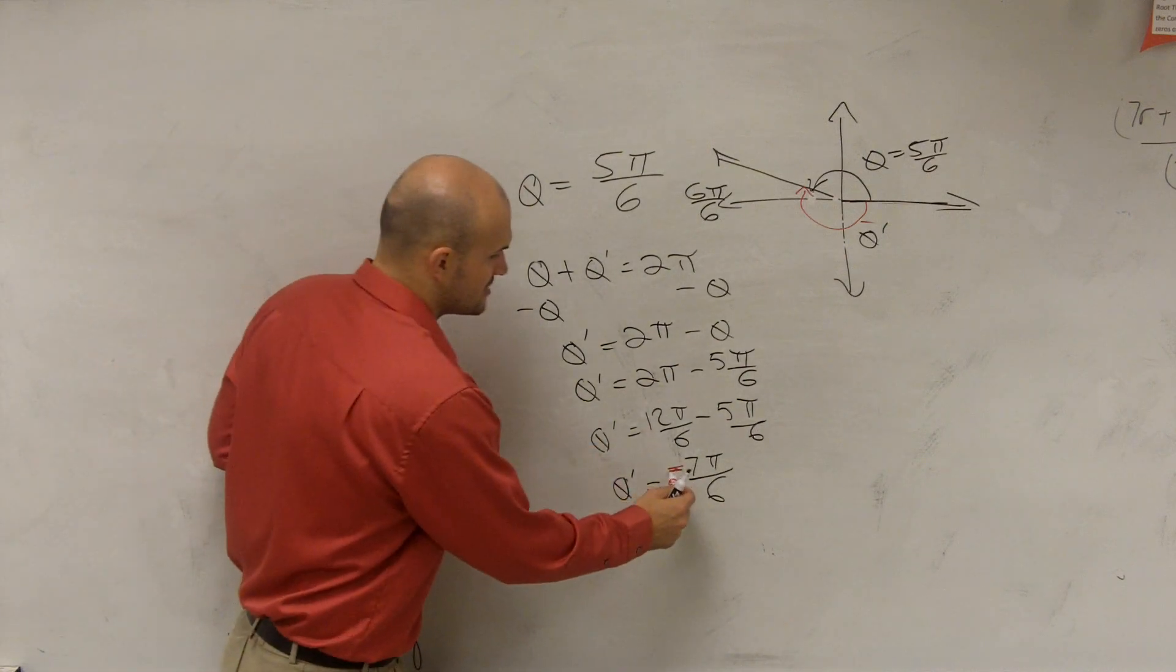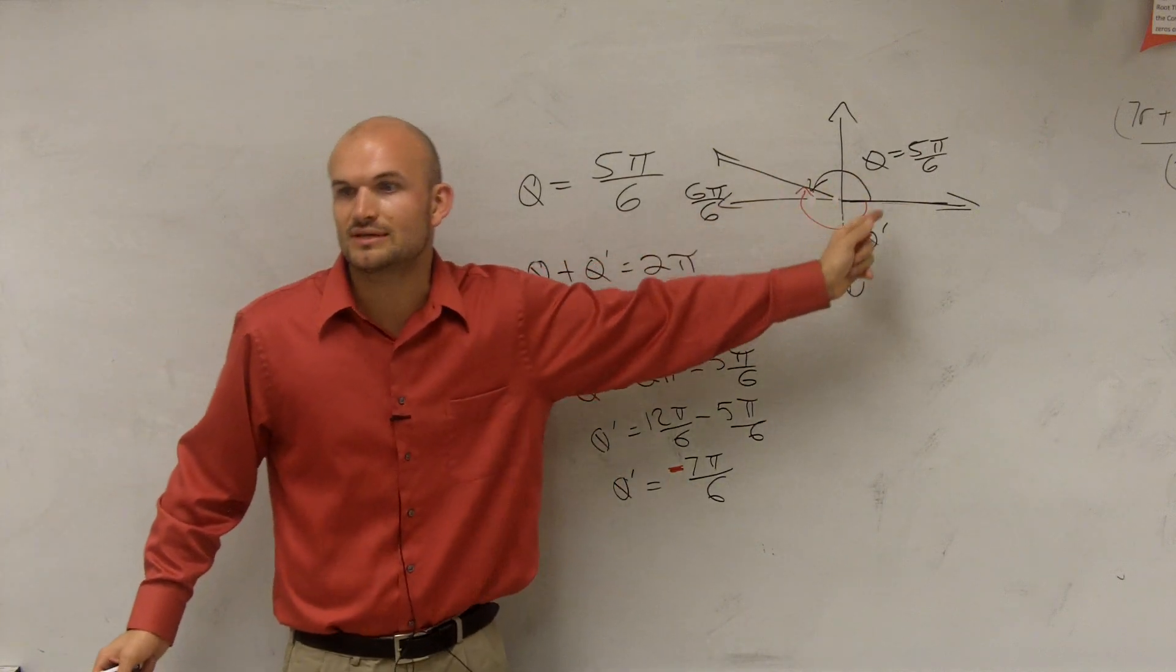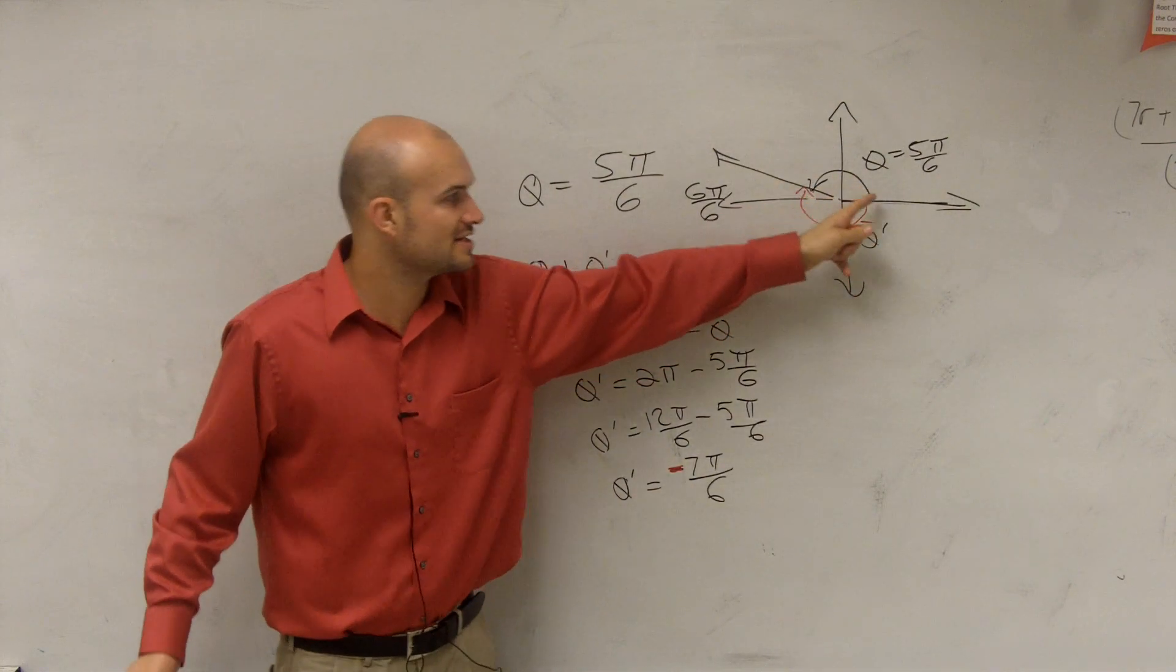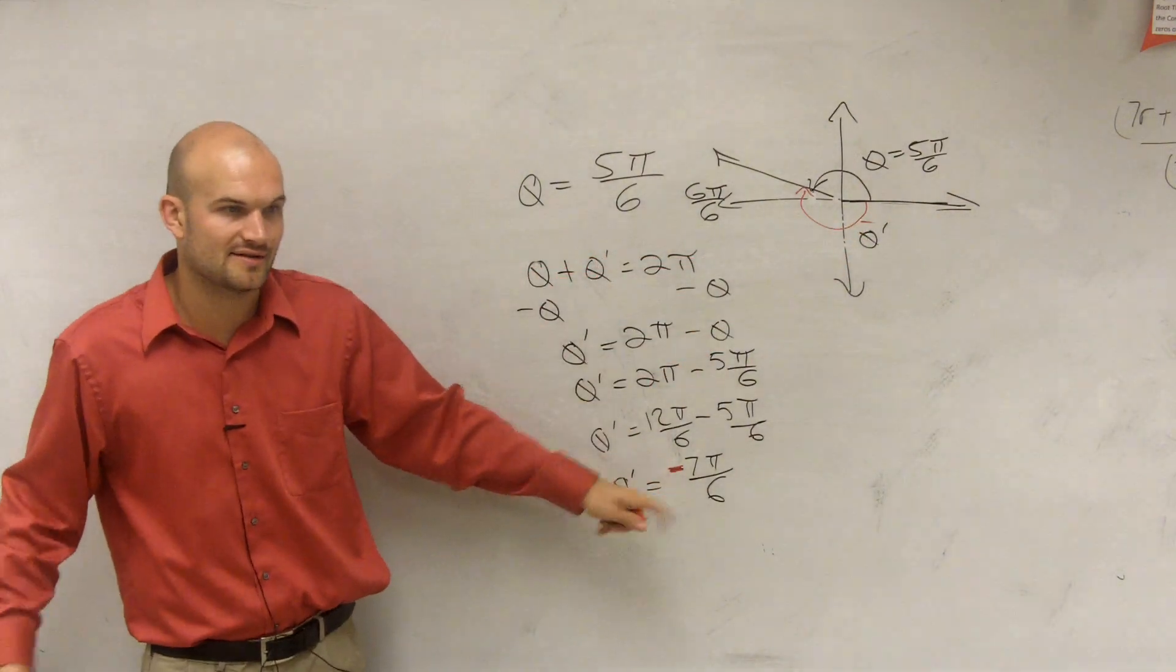So that's why it can get a little confusing if I do it this way, but me, on a graph, this conceptually kind of makes sense to me because you can see, oh, from here to here it's 5π over 6, so from here to here it's going to be 7π over 6, but it's in the negative direction, so you've got to add the negative symbol.